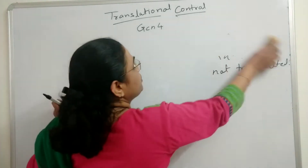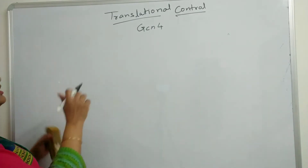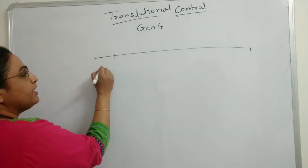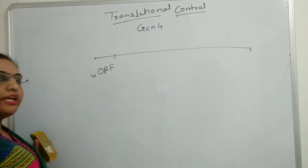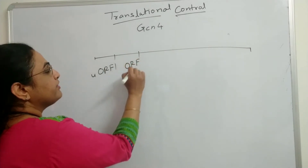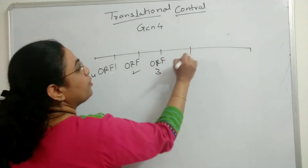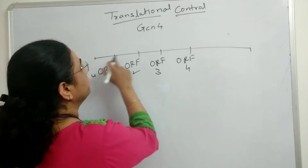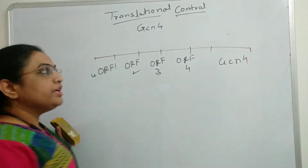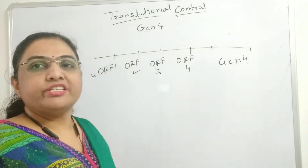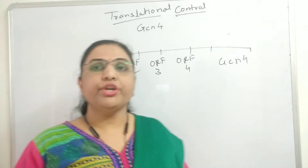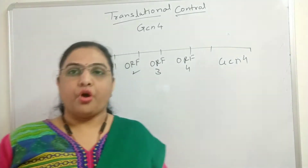Before going towards the actual mechanism for translational control, you have to learn something about the GCN4 mRNA. In the GCN4 mRNA there are upstream open reading frames — ORF1, ORF2, ORF3, ORF4 — and then after ORF4, the actual GCN4 coding region is present. Each ORF has its own start codon and its own stop codon.